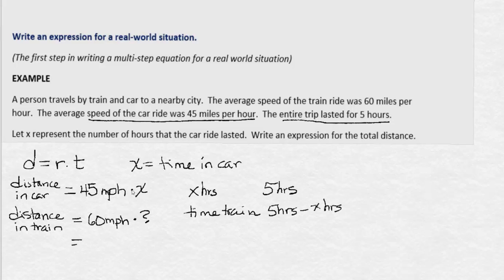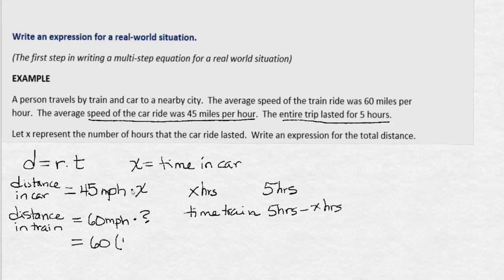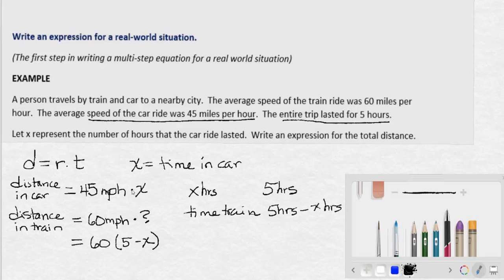So to finish our expression for the distance in the train, we're going to have 60 times 5 minus x. A common error would be to write x minus 5. But remember, 5 is the total hours. This is the larger amount of time. So we need to subtract x from 5.